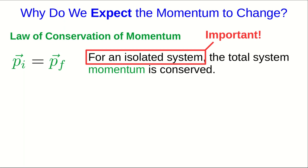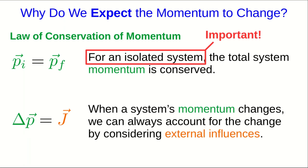And so here's our other statement of conservation of momentum. And it could be stated this way, that anytime we observe a momentum change for our system, we can always account for that change by considering external influences. Experimentally, this is really a more useful version of the law.